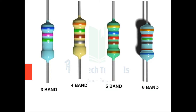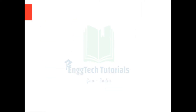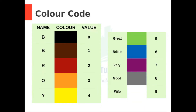Now that you know from which side to read the colors, we will see how to remember the color code of the resistors. To remember the color code, you need to remember this sentence: B, B, R, O, Y, Great Britain, Very Good Wife.